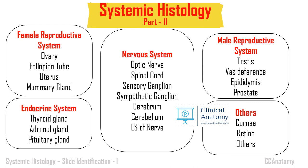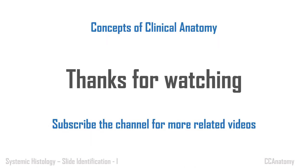Hope you understood part one of systemic histology. In part two of systemic histology we will see the male reproductive system, female reproductive system, nervous system, endocrine system, and other miscellaneous slides. Hope this video is helpful for you — subscribe to our channel and we will upload part two soon. Kindly share this with your friends. Thank you.